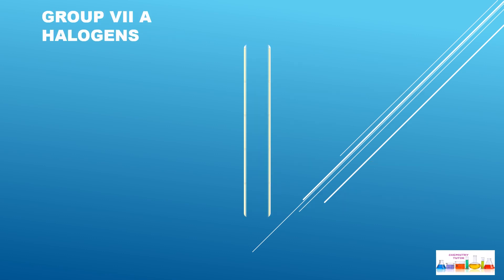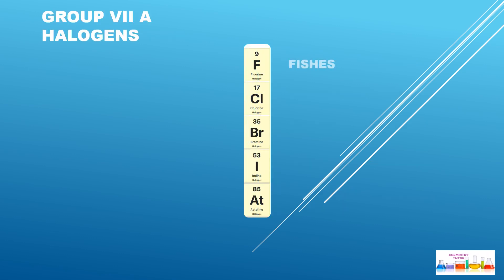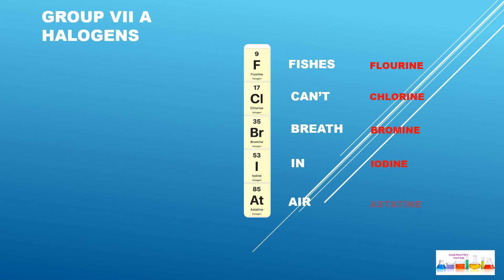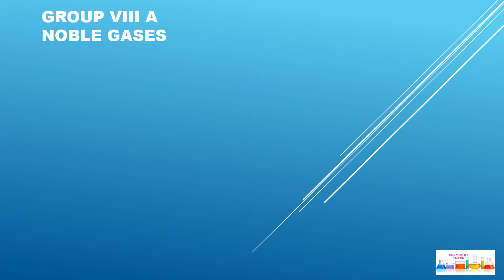Group 7A: Halogens. We need to learn the sentence: 'Fishes Can't Breathe In Air.' Fishes is for Fluorine, Can't is for Chlorine, Breathe is for Bromine, In is for Iodine, and Air is for Astatine.